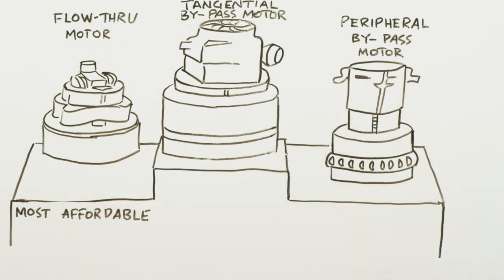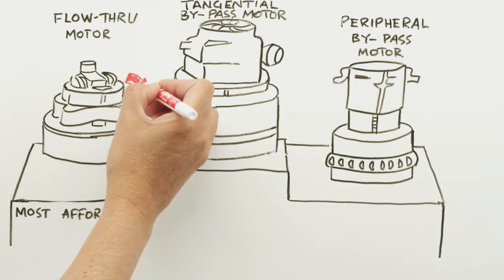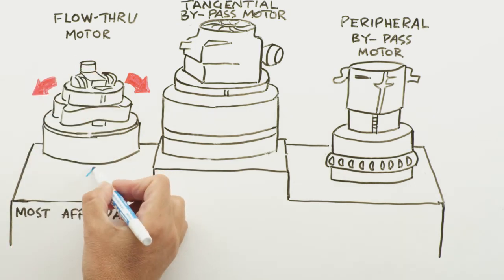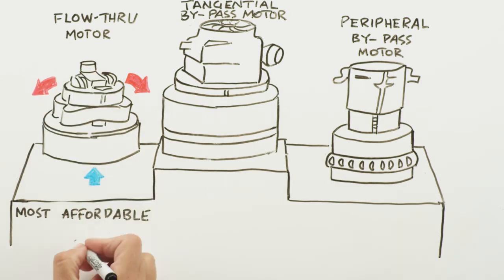A flow-through motor is the most affordable, but it typically has the shortest life expectancy. Does not have a dedicated cooling fan, and uses exhausting air to cool the motor. This is a good motor, but the least desirable of the three.